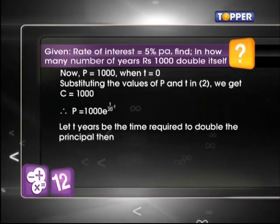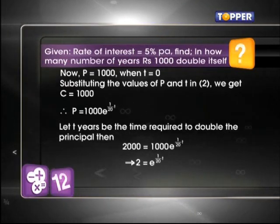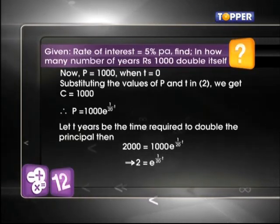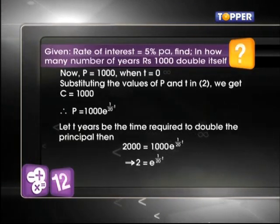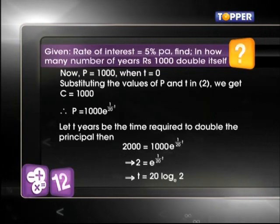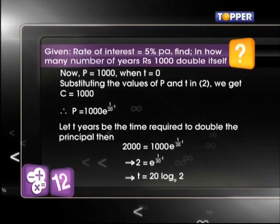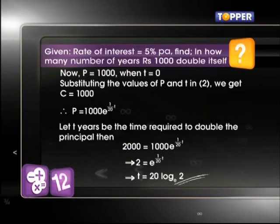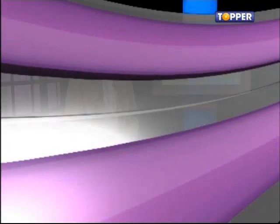using this equation for t years we get 2000 = 1000·e^(t/20). On solving we get t = 20 log 2.